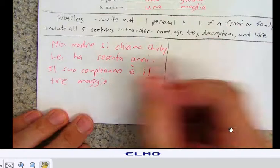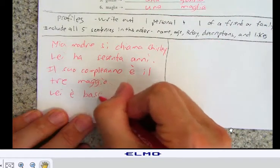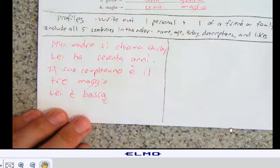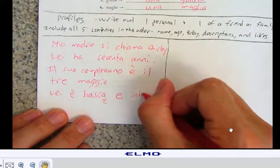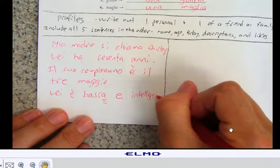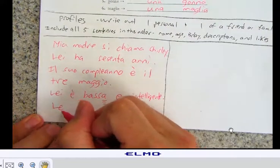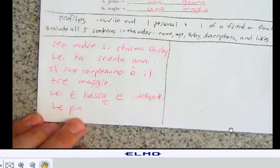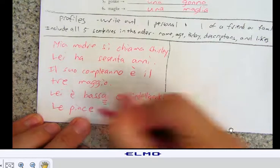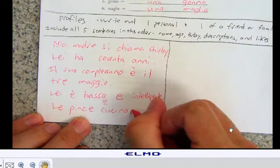Okay. Now I'm going to say her description. Le e basa. I'm describing a girl, so the O changes to an A. E, this is the word and. I can say intelligente. She's short and she's smart. What does she like to do? Le piace. L-E here, not L-E-I-L-E. That's an indirect object pronoun. Le piace. And how about we just say, she likes to cook. Cucinare.